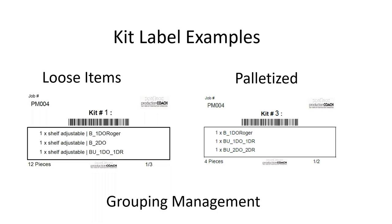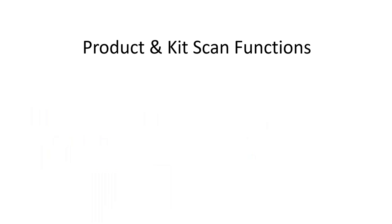Now let's talk about product and kit scan functions, which happen later in the manufacturing process. For customers utilizing CNC technology as first operations, it is possible through connected software to scan a single barcode representing a nest pattern and update the status of all the parts in the nest. If you're producing huge numbers of parts, do you want to scan every single one at first operation when you could scan one barcode representing the nest and update all 12 parts in it?